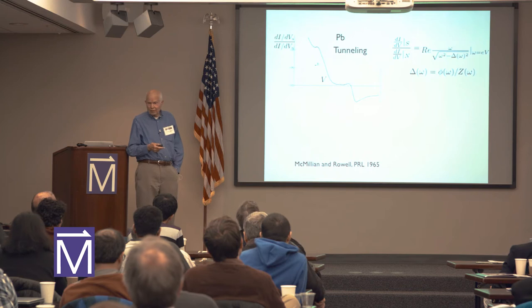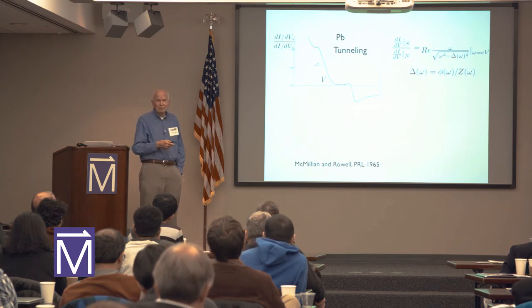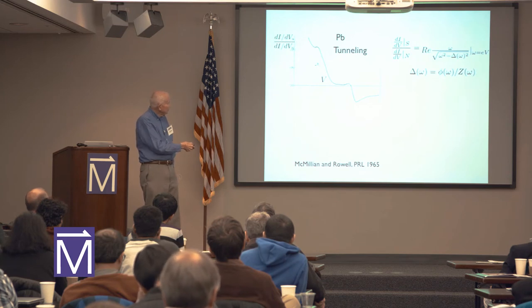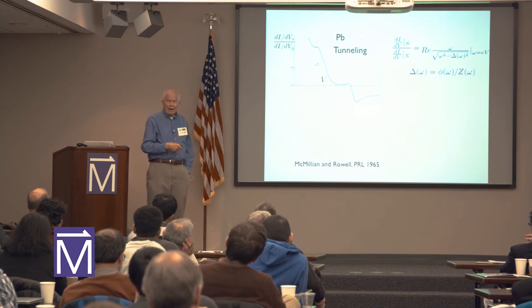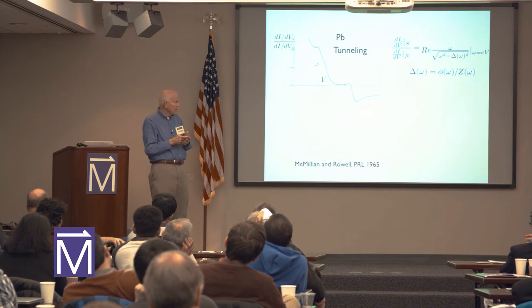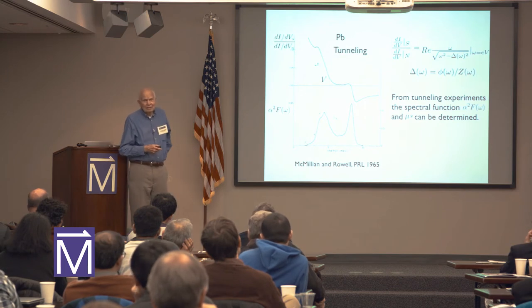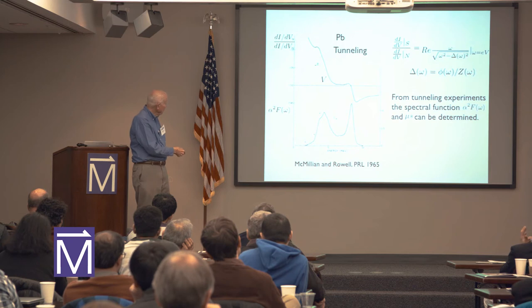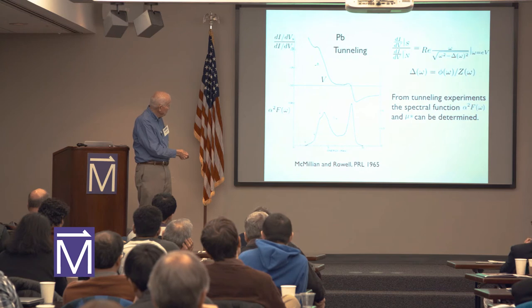This is at a time when there's beautiful tunneling data by John Rowell, and Bill McMillan has come along with Eliashberg-like equations. They've taken the dI/dV characteristics and extracted the gap and Z. This is a tricky calculation with real and imaginary parts of delta and Z. Bill McMillan wrote an ingenious program to do this and they pulled out alpha squared F omega. It has details, Van Hove singularity pieces, and shapes of transverse and longitudinal phonons.